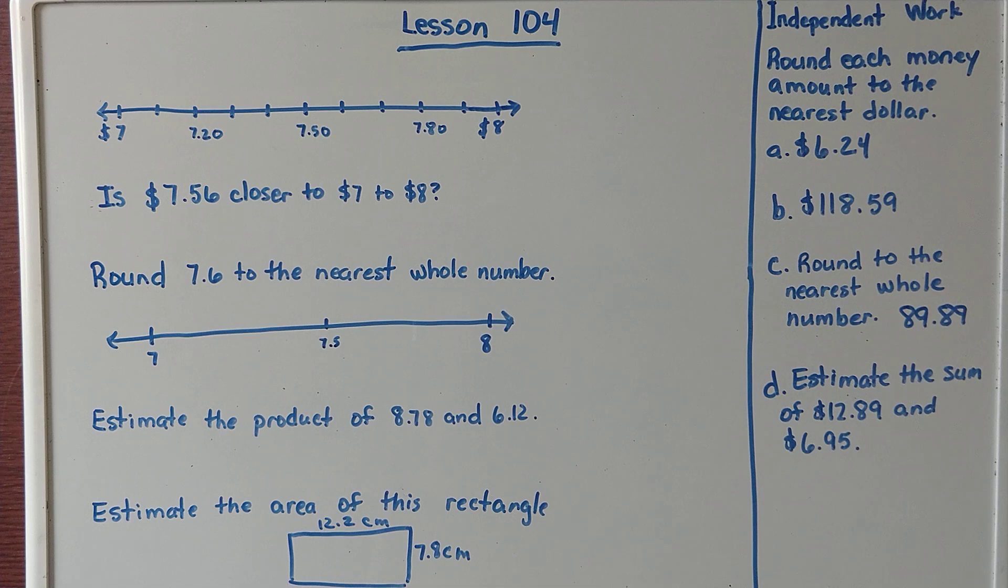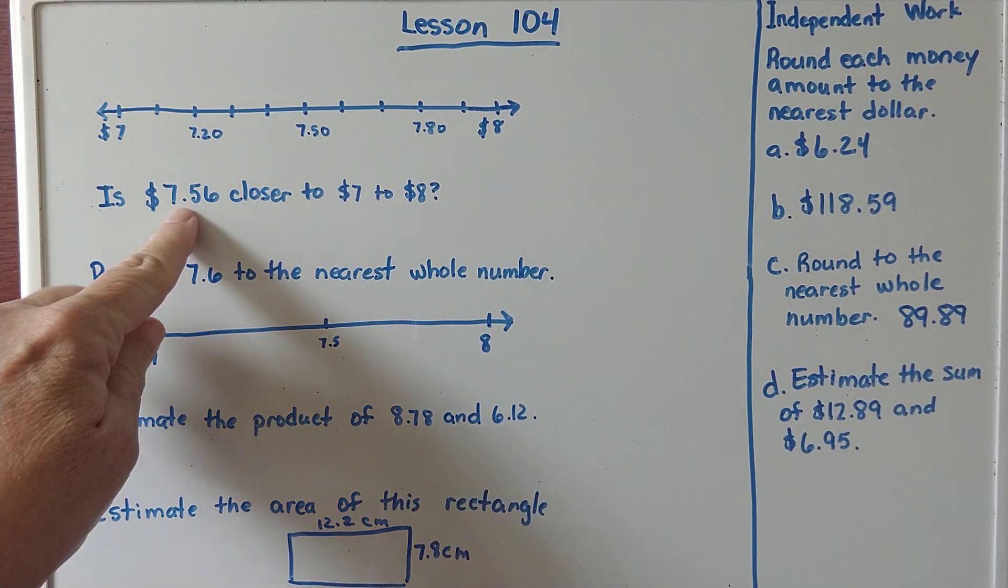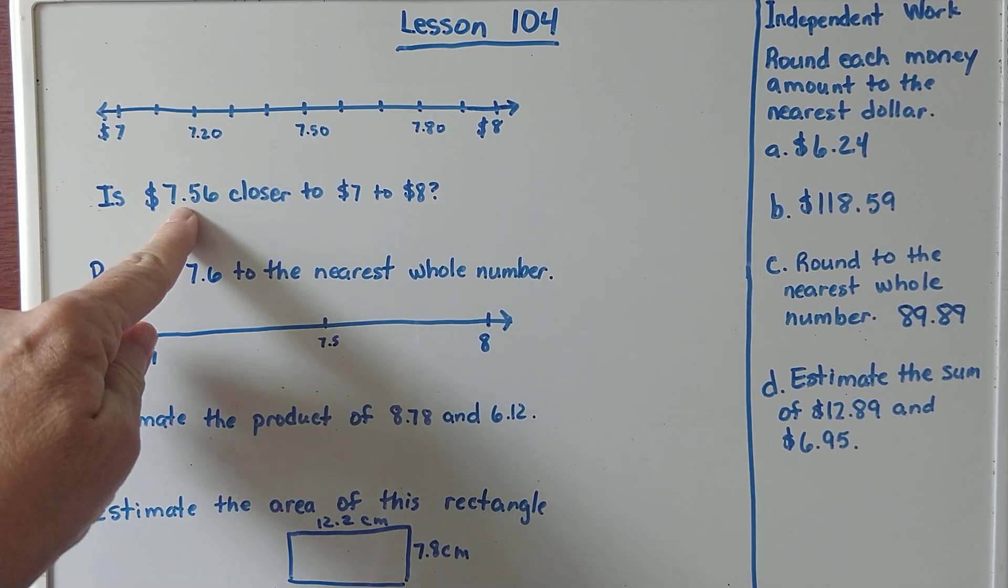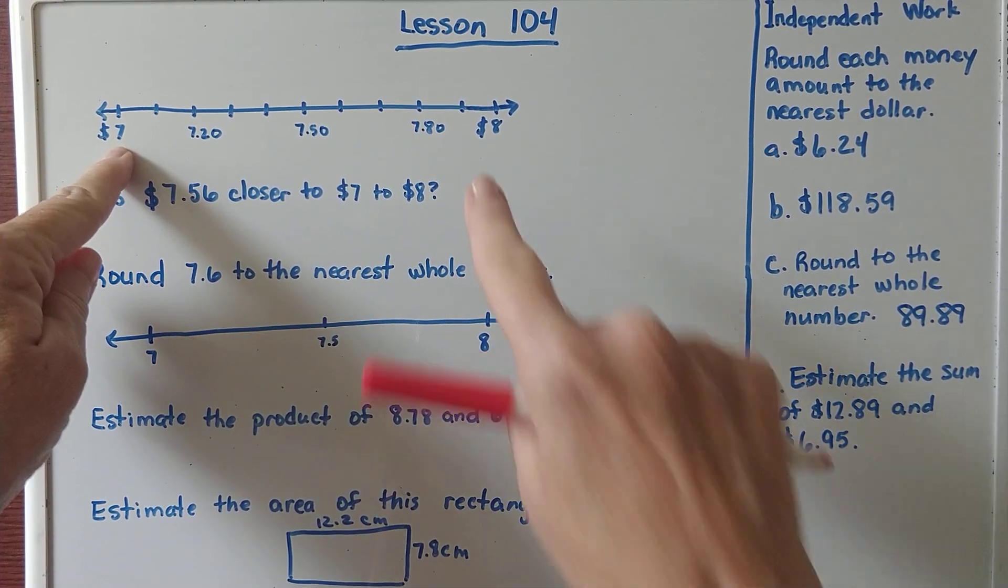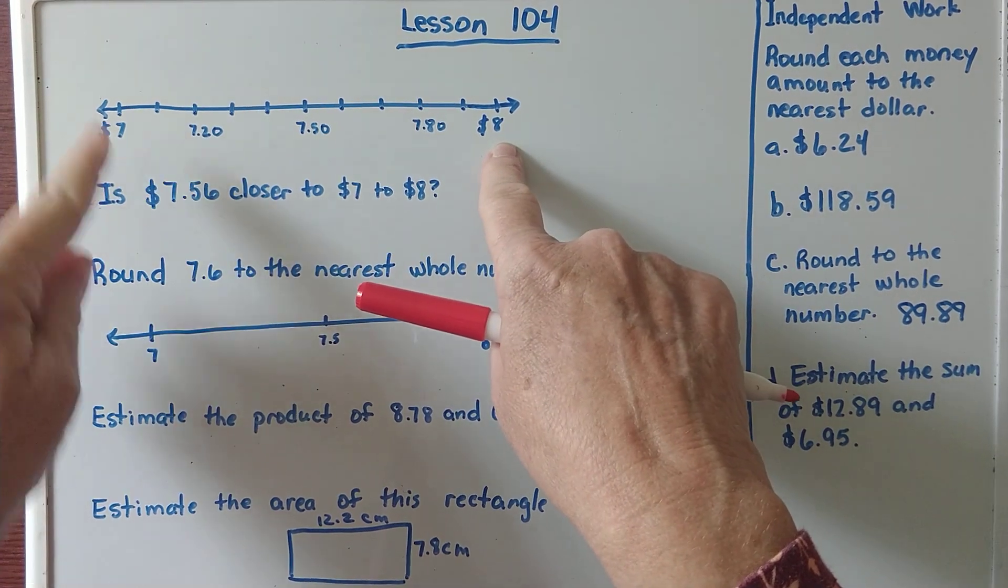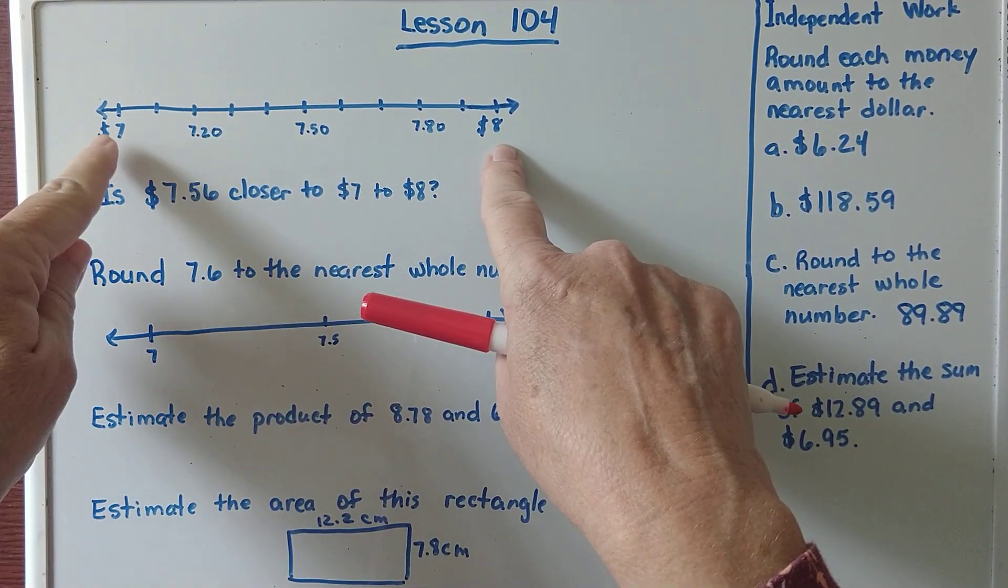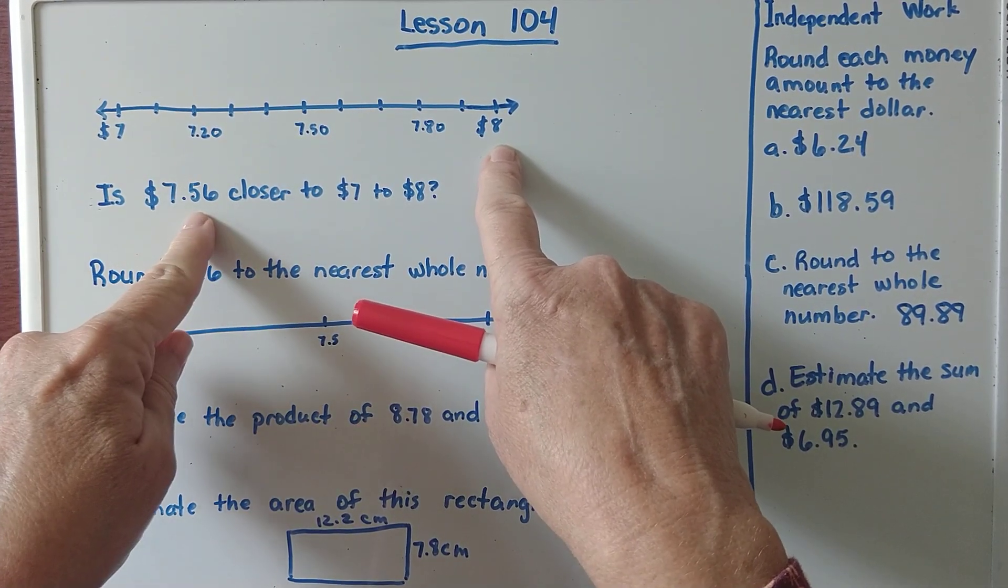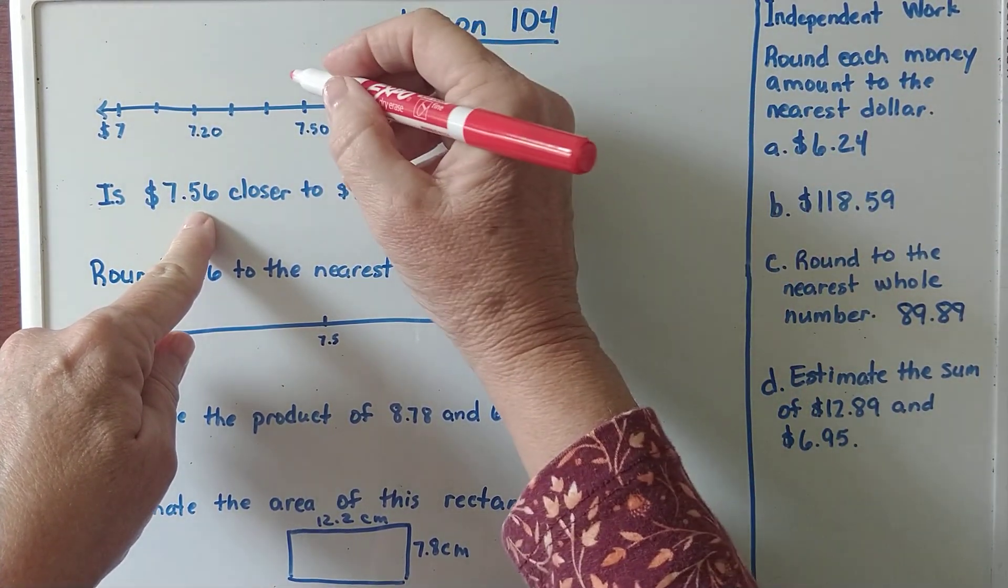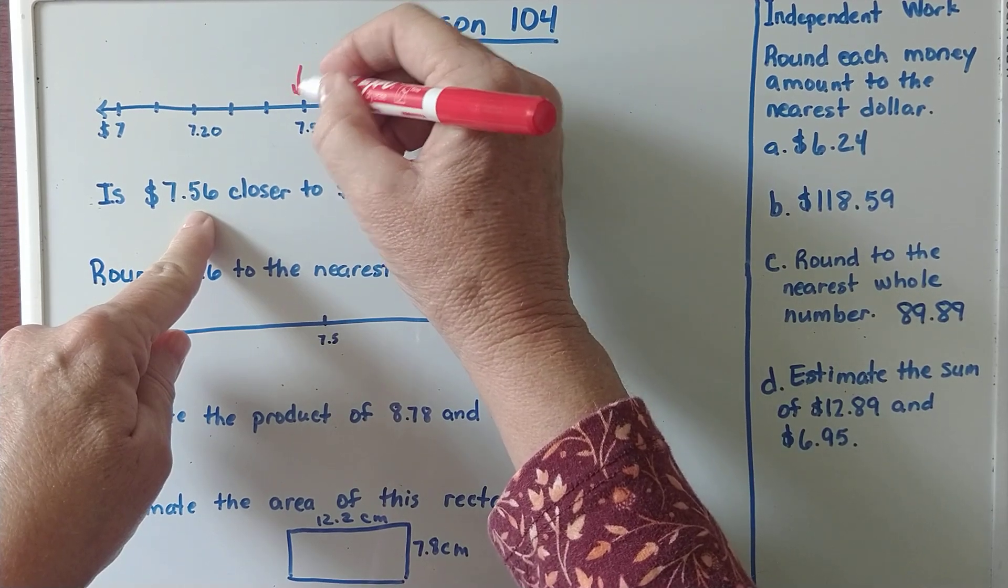As a bit of review, we can see $7.56. Is that closer to $7 or $8? $7.56 is in between those two dollar amounts, and we know that $7.50 is right in the middle.